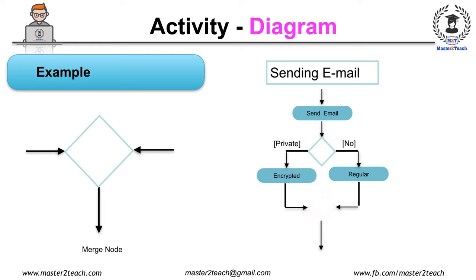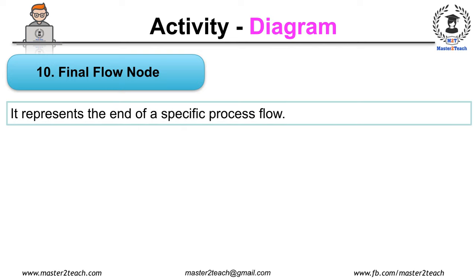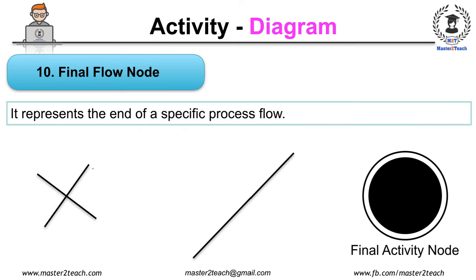Let's learn more notations used in the activity diagram. Final Flow Node: it may be confusing with the final activity node. It represents the end of the specific process flow, which is denoted by a circle with a cross line inside the circle.